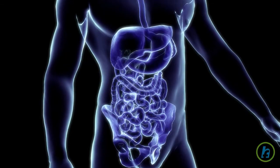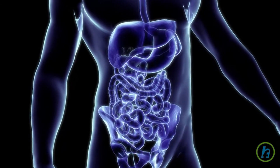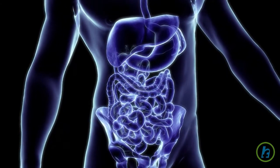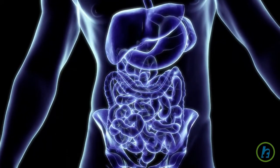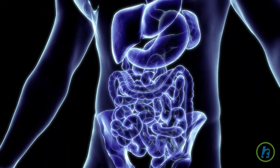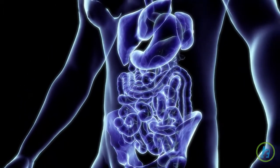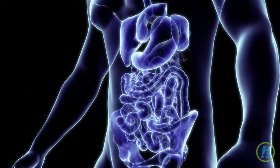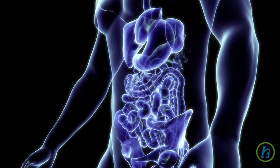Sometimes the cells of the inner layer begin to grow rapidly without order. When this occurs, cancer can develop. Cancer of the stomach is called gastric cancer. Gastric cancers can spread to the other layers of the stomach and to nearby lymph nodes.